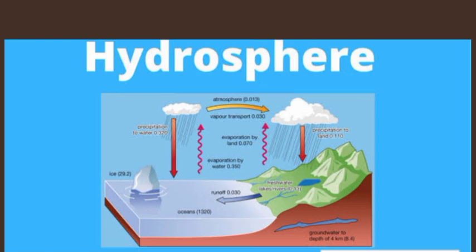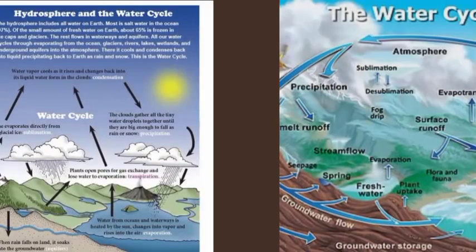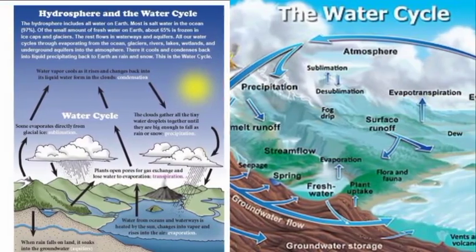Next is the hydrosphere. The hydrosphere is the total amount of water on planets. The hydrosphere includes water that is on the surface of the earth or planet, on the ground, and in the air. A planet's hydrosphere can be liquid, vapor, or ice. On earth, liquid water exists on the surface of oceans, lakes, and rivers.